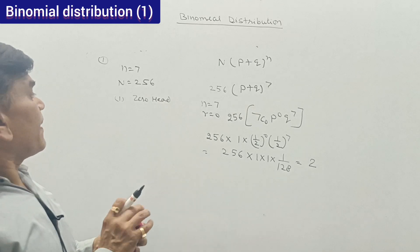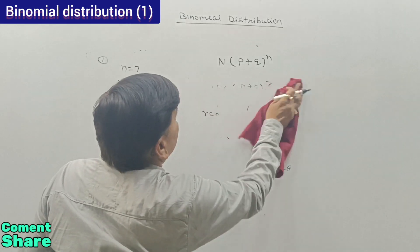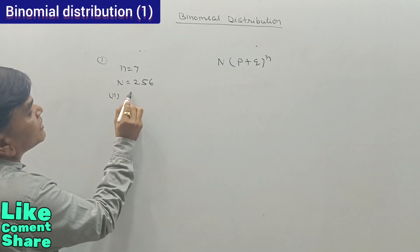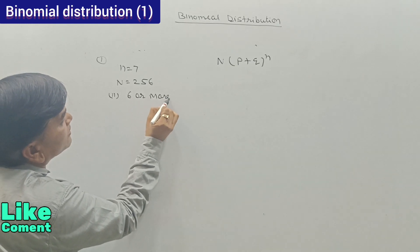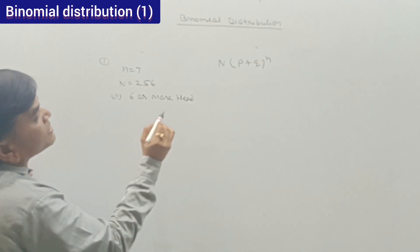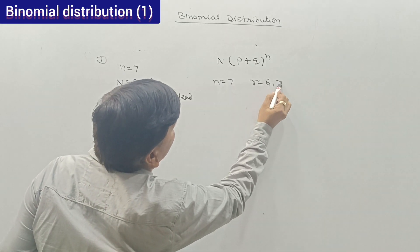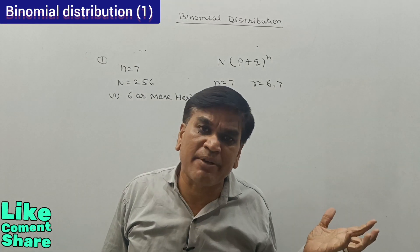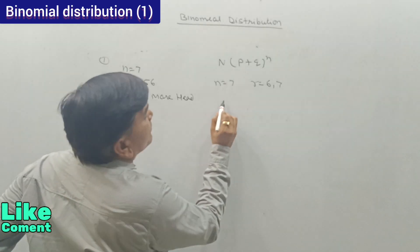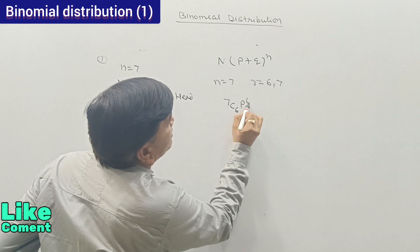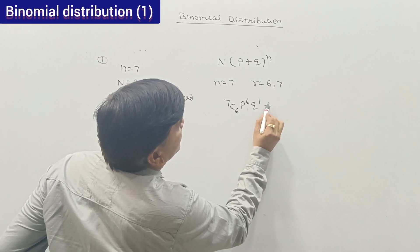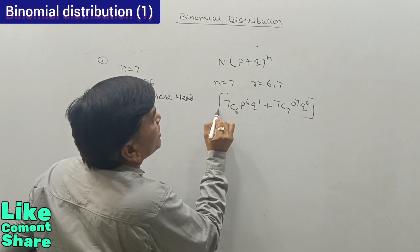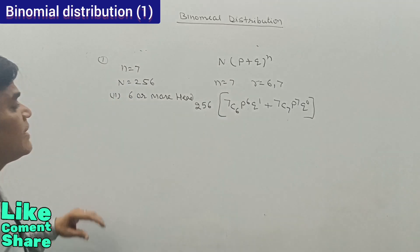The second question: we are to get 6 or more heads. It means r = 6 or r = 7. So the calculation is 7C6 × p^6 × q^1 plus 7C7 × p^7 × q^0. This is Bernoulli's theorem, and this is repeated 256 times.